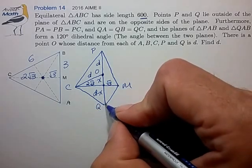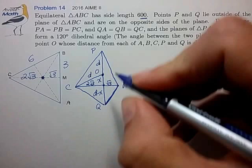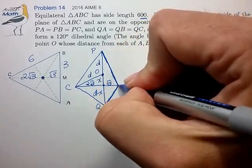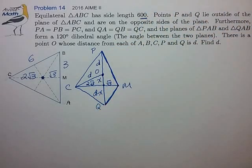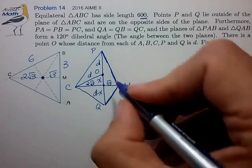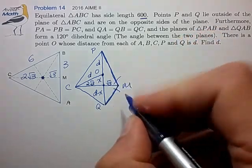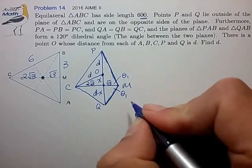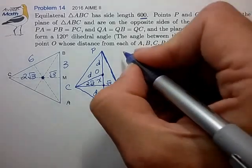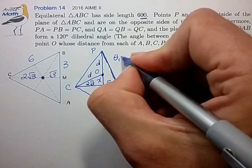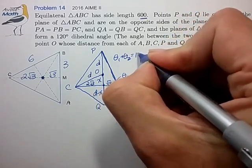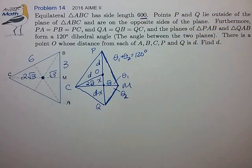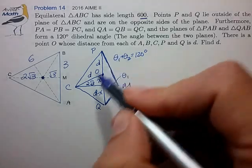And we're also told that this angle QMP is 120 degrees, and we don't know what these smaller angles are, θ₁ and θ₂. But we do know that θ₁ plus θ₂ is 120 degrees. So that looks pretty helpful now. So let's see if we can try to connect some of this information.